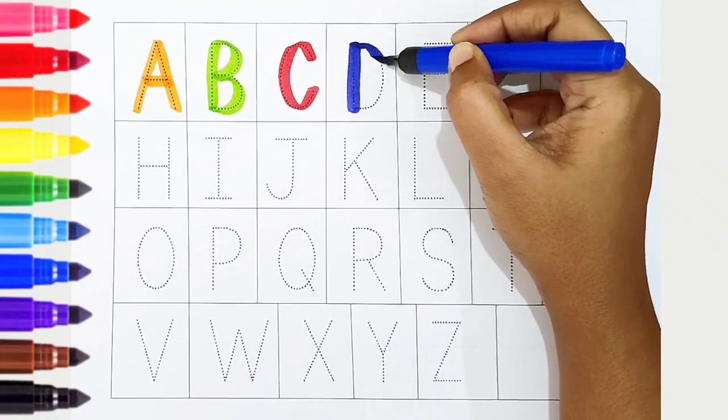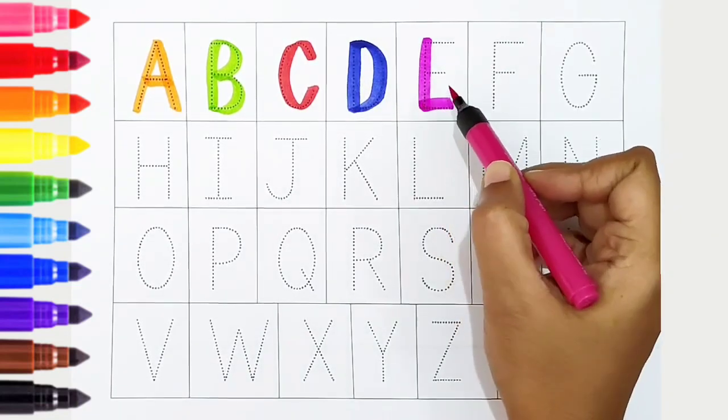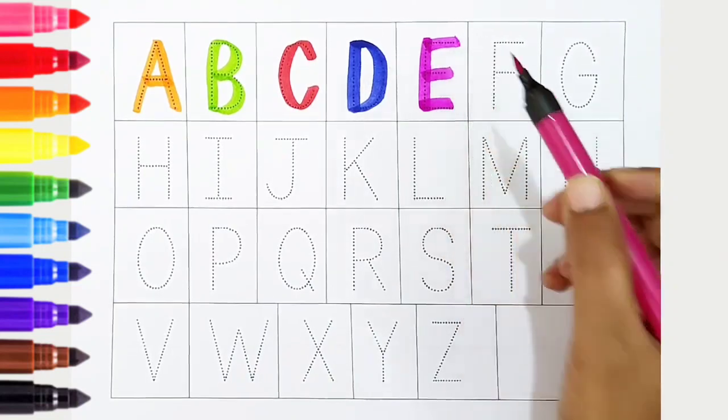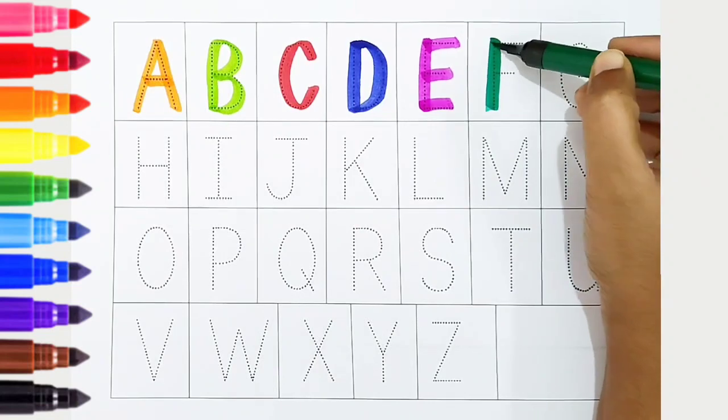...color, D is for donkey. E, dark pink color, E is for eggplant. F, dark green color, F is for...